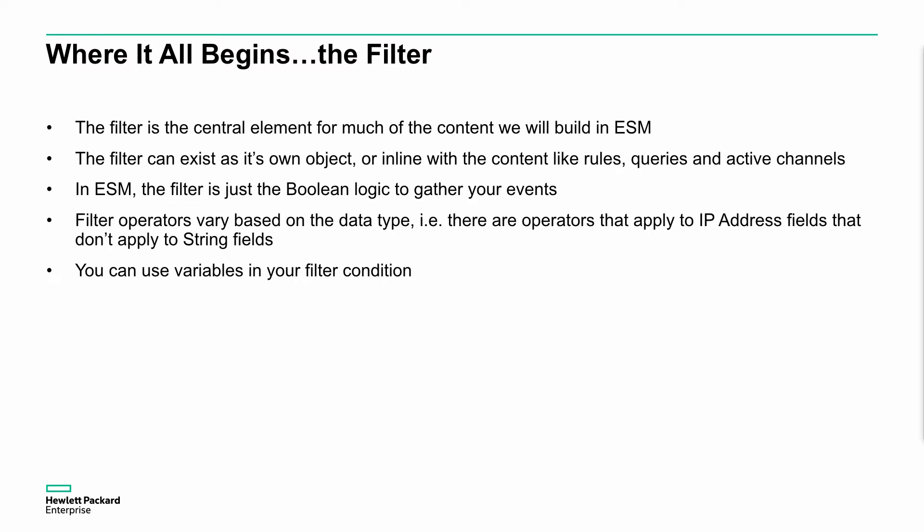In ESM the filter is just the boolean logic to gather the view of the actual events we want to look at. There are multiple operators that we can apply, but just bear in mind that they vary according to the data type. So if you're looking at IP address fields, you can use certain filter operations that wouldn't apply to a string field. Just bear that in mind with relevance to the schema and the events and the fields you're looking at specifically.